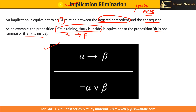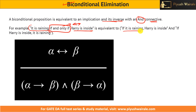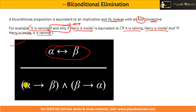Next is biconditional elimination. A biconditional proposition is equivalent to an implication and its inverse connected with and. For example, 'it is raining if and only if Harry is inside' is equivalent to 'if it is raining then Harry is inside, and if Harry is inside then it is raining.' So alpha bi-directional beta means alpha implies beta and beta implies alpha. Please remember biconditional elimination.